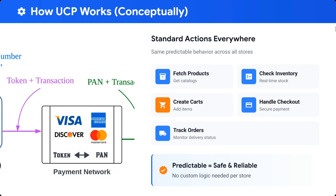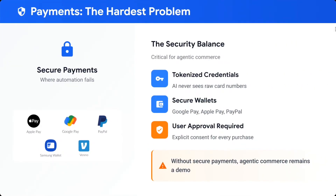How UCP works: it fetches product catalogs, checks inventories, creates carts, handles checkouts, and tracks orders. Payments are the hardest problem. Security concerns are critical for agent e-commerce. UCP uses tokenized credentials — AI never sees raw credit card details, which is very important. Secured wallets and user approval are required.